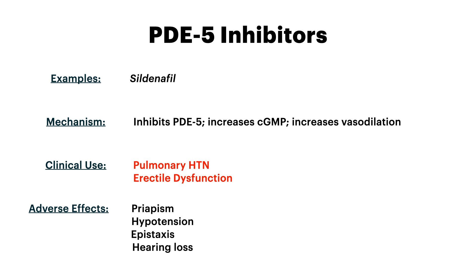Now let's talk about PDE5 inhibitors. The example here is sildenafil. The mechanism, as the category name implies, is that it inhibits phosphodiesterase-5. What happens is that cGMP is increased, which leads to vasodilation. Clinically this is used in pulmonary hypertension, but sildenafil is also used in erectile dysfunction — again, it's all about vasodilation. Adverse effects include priapism, hypotension because it's a vasodilator, epistaxis, and unexplained hearing loss. That's kind of unique, so I would know that hearing loss is associated with PDE5 inhibitors.